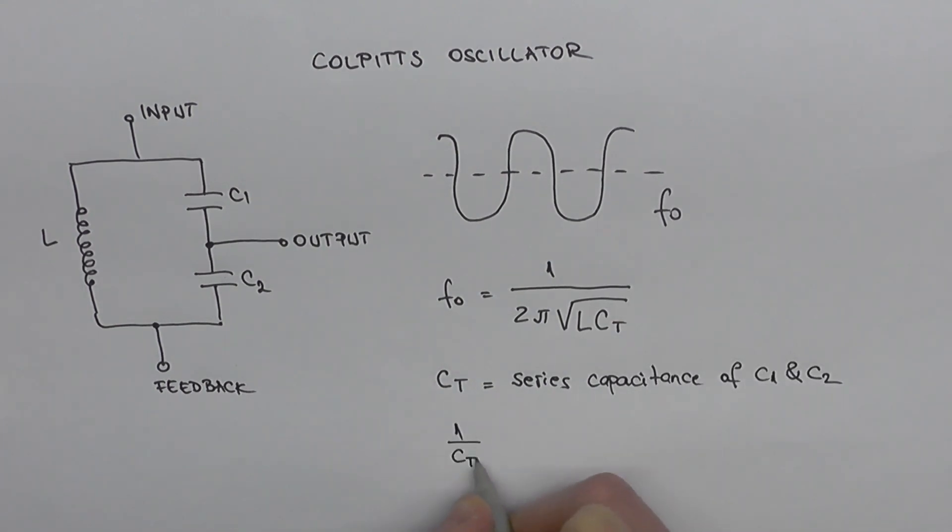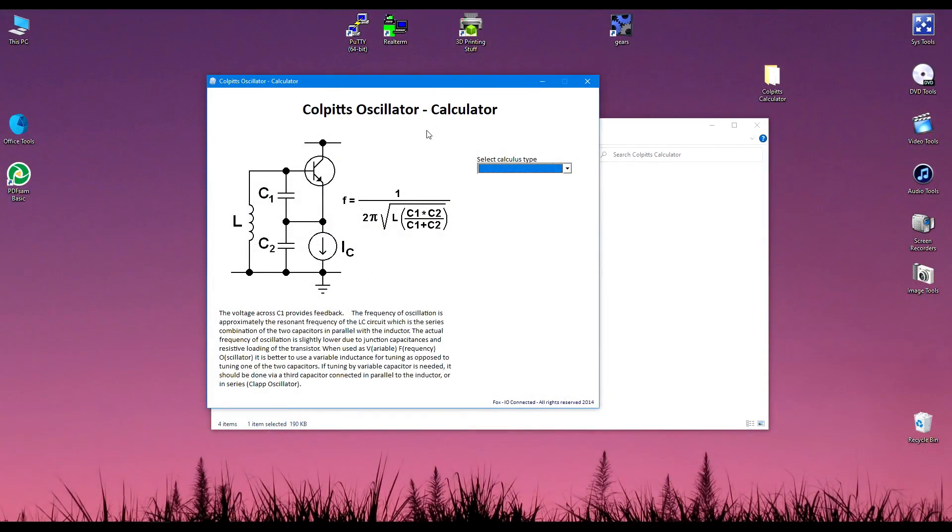And I have a tool to calculate this frequency or the values of the capacitors and the inductor to get a specific frequency. Let me go back to my computer. This is a tool that I wrote in Delphi a few years ago. And what it does is, based on this formula right here, it calculates one of these values if I know two of these values.